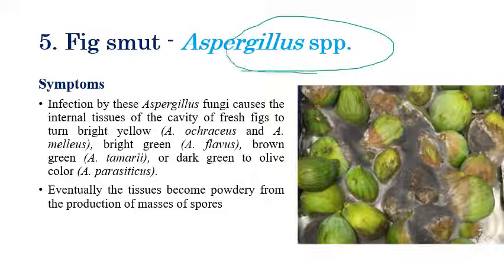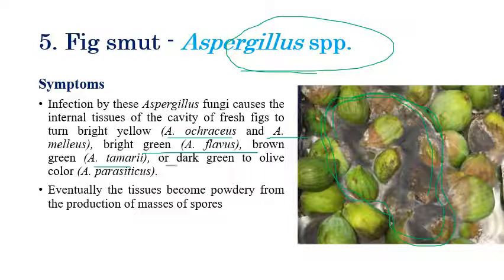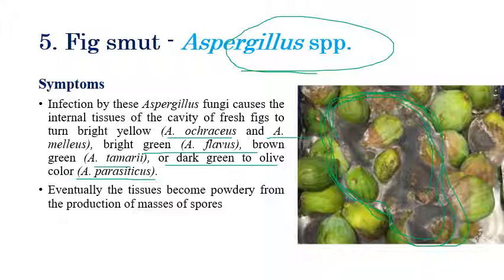The last disease is fig smut, caused by Aspergillus species. The infection of Aspergillus causes black color moldy growth to cover the fig. This is very problematic in fig production as well as during storage. The cavity of the fig is covered with this black color moldy growth. Different species of Aspergillus involved include: Aspergillus ochraceus and Aspergillus melleus (bright yellow), Aspergillus flavus (bright green), Aspergillus tamarii (brown-green), and Aspergillus parasiticus (dark green to olive). These infected tissues become powdery masses.